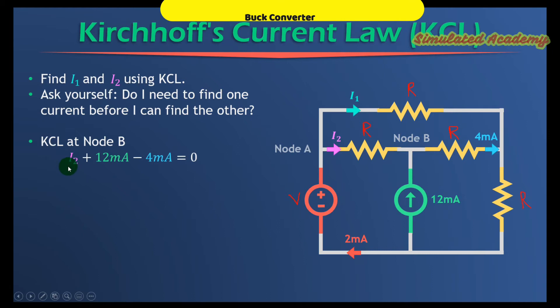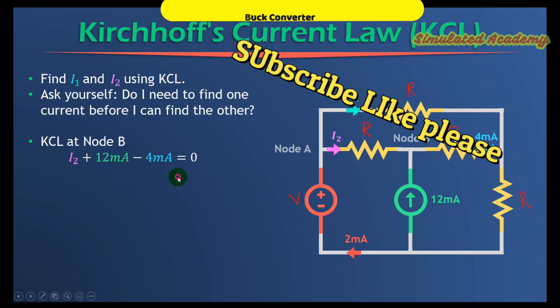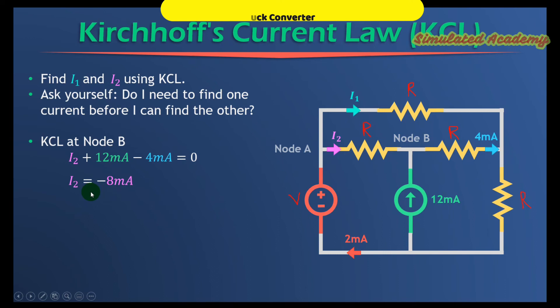The entering current is I2, which is positive. I will take the entering current positive and the leaving current negative. The 12 mA is entering node B, that is positive, and 4 mA leaving node B, that is negative. Solve this for I2, you will get minus 8 mA, that is flowing in this direction.